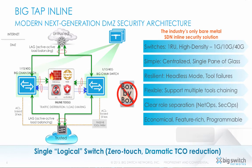BigTap can also be deployed in your DMZ network, drastically simplifying the connection of inline security tools like threat protection, SSL decryption, and so on. While its resilient architecture ensures that the network is secure and remains up, even amidst a variety of failures, BigTap inline also provides a host of additional features that include load balancing traffic across multiple tool instances, chaining multiple tools together, and improving tool performance.